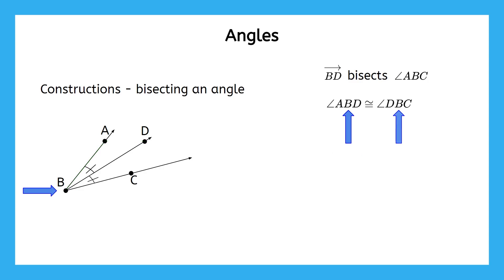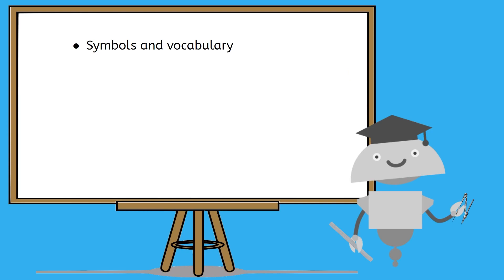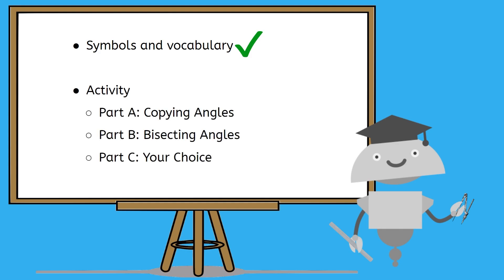All right, so that's all your new background information. We'll be starting an activity soon, so pause the video here and go back to anything you need to see again before I explain the activity. Now that you know all about the new symbols and vocabulary you'll need, it's your turn to complete a three-part activity in your notes template. You'll learn how to copy angles, bisect angles, and one other angle construction of your choice. Once you can check these off the list, then it'll be time to move on to your practice problems.